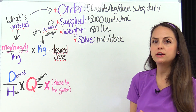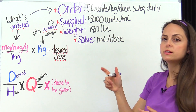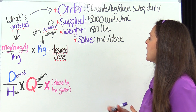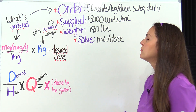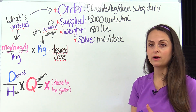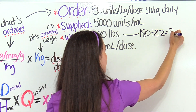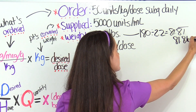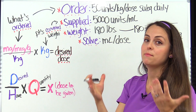This problem says the physician has ordered 50 units per kilogram per dose, to be given subcutaneously daily. We're supplied with a vial that says 5,000 units per mL. Our patient weighs 180 pounds. This problem wants to know how many milliliters per dose we'll administer — so we'll need an extra step. First, we convert the patient's weight: 180 divided by 2.2 gives us 81.81 repeating, which rounds to 81.8 kilograms.